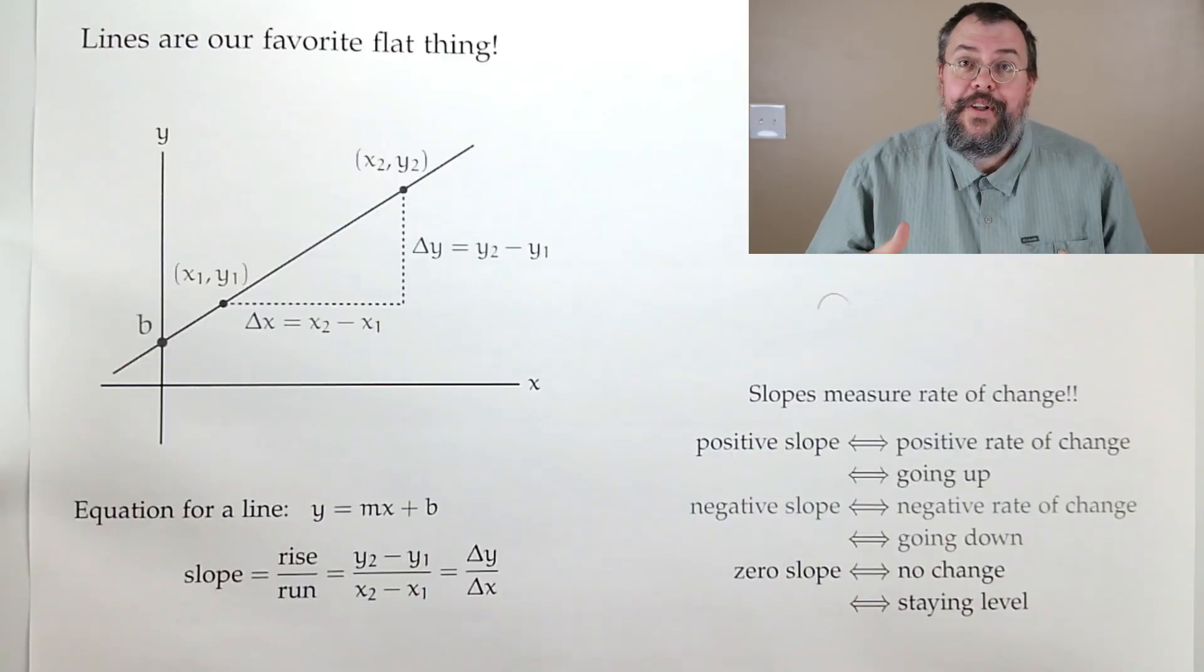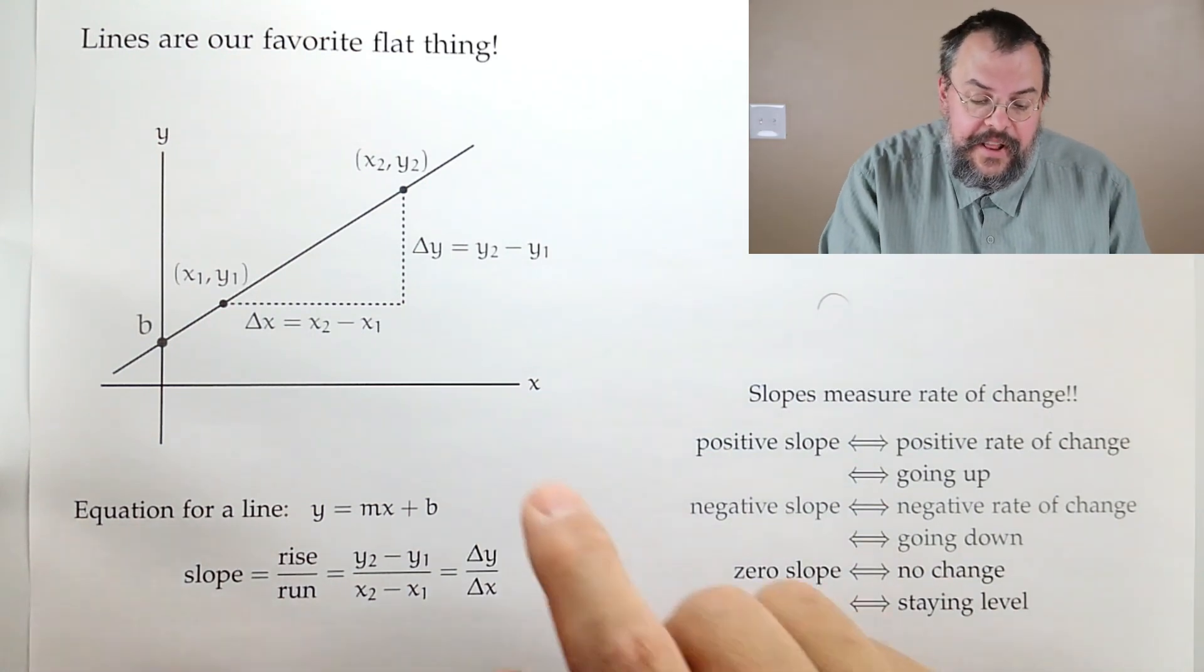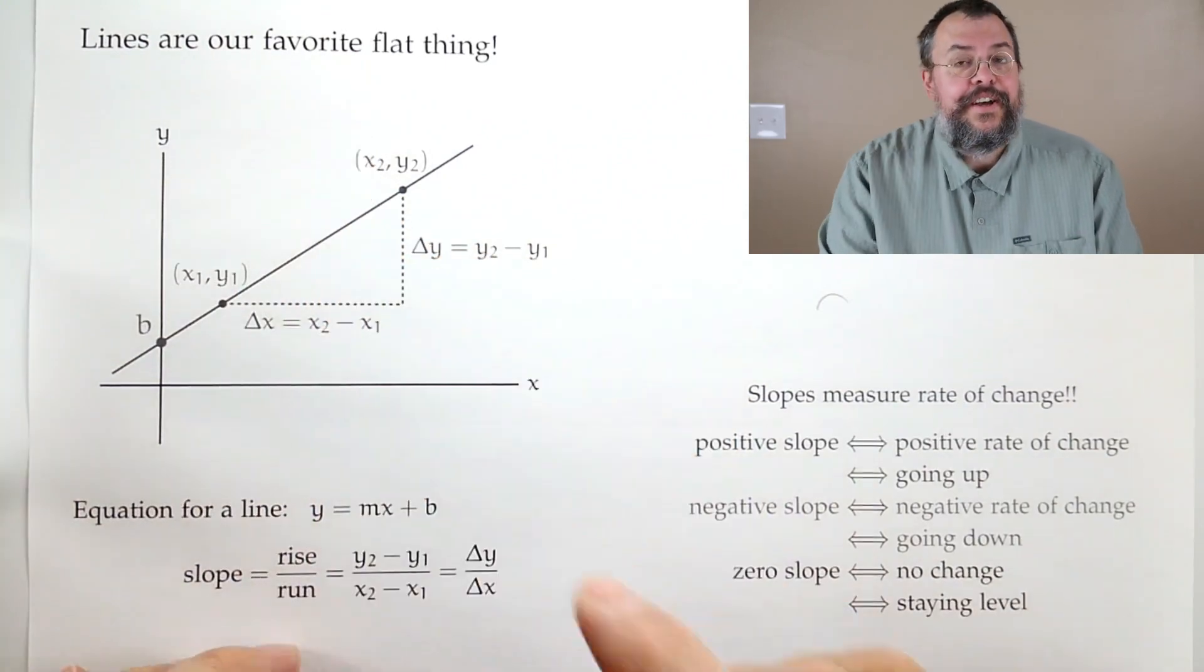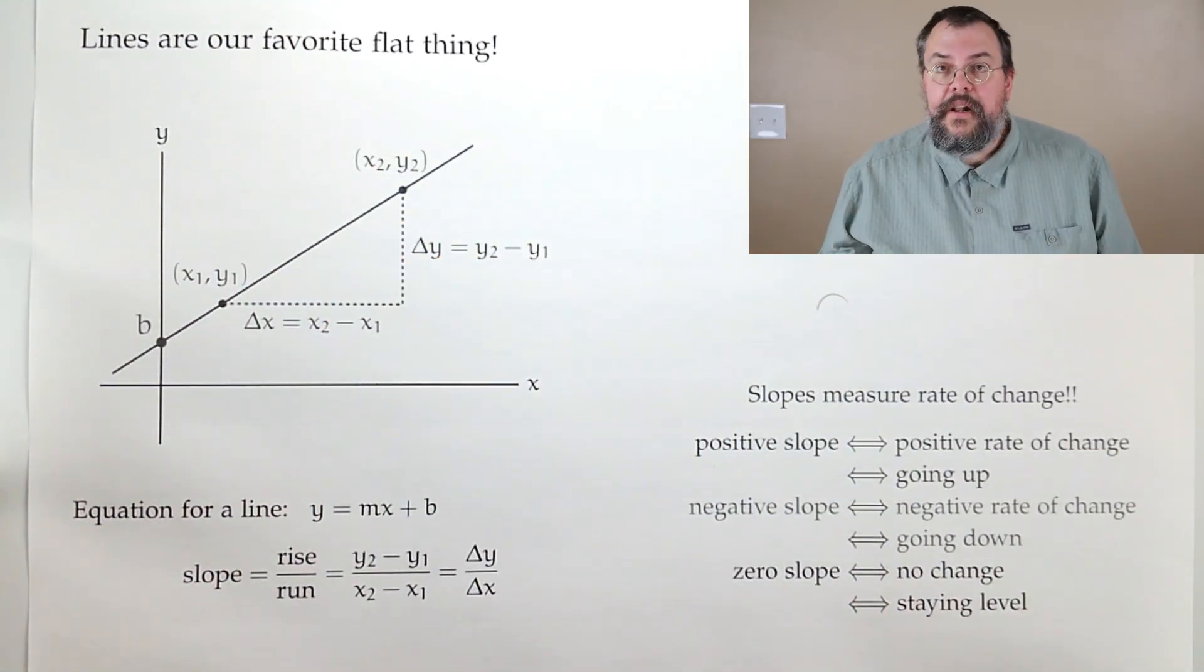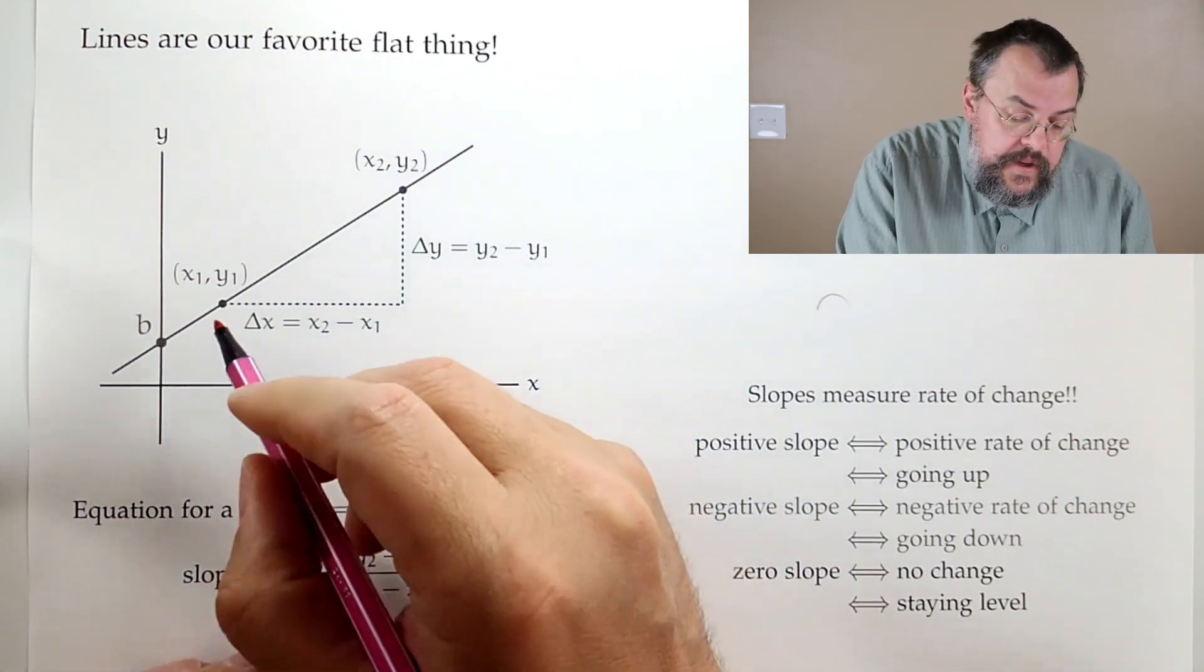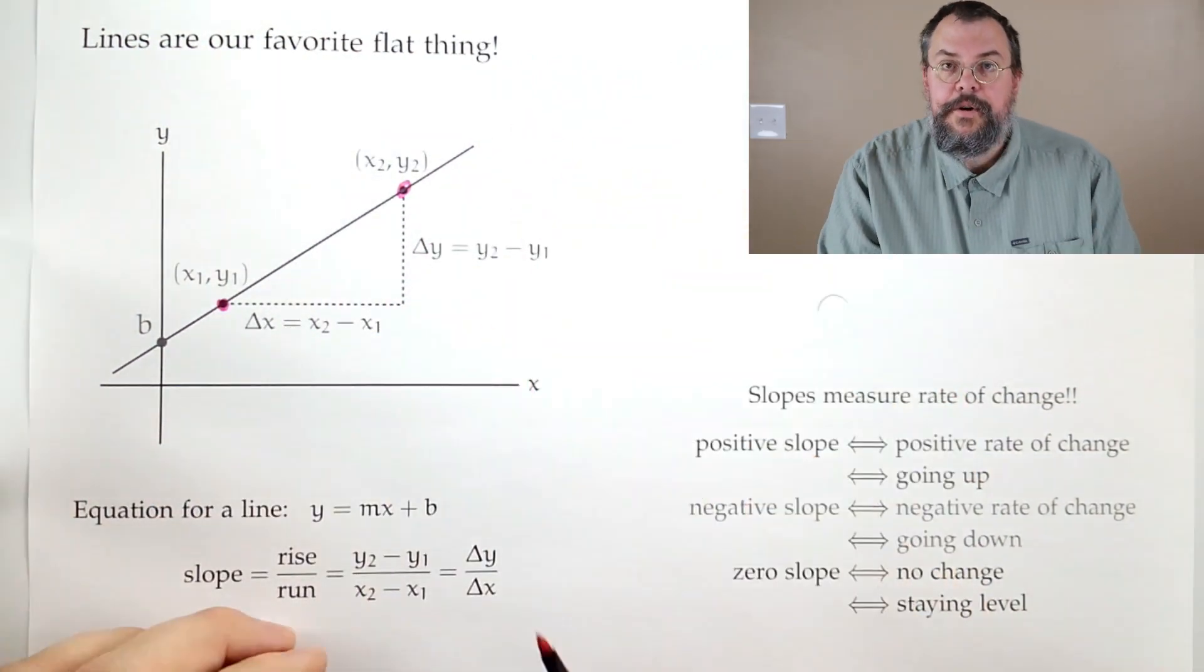All right, so let's get into it. So we're going to start, as we almost always start doing calculus stuff, thinking about our flat thing. So what's our flat thing? Well, our favorite flat thing has to be lines. Lines are fantastic. They're nice, they're flat, and they're easy to understand. Usually, the way we think about a line is we say, hey, look, here's two points.